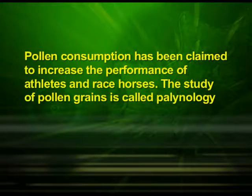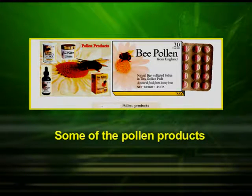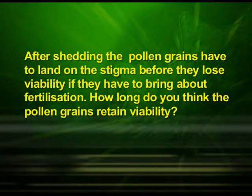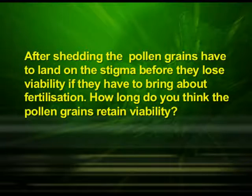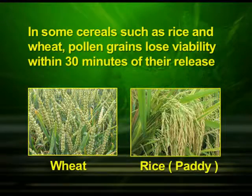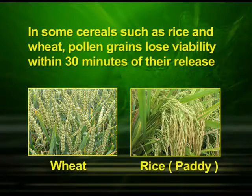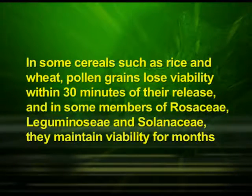Pollen consumption has been claimed to increase the performance of athletes and race horses. The study of pollen grains is called palynology. After shedding, the pollen grains have to land on the stigma before they lose viability. The period for which pollen grains remain viable is highly variable and depends on the prevailing temperature and humidity. In some cereals such as rice and wheat, pollen grains lose viability within 30 minutes of their release. In some members of Rosaceae, Leguminaceae and Solanaceae, they maintain viability for months.